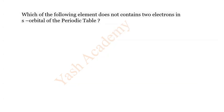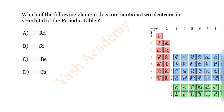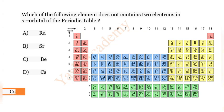Question 3: Which of the following elements does not contain two electrons in the s orbital? Options: A) Radium, B) Strontium, C) Beryllium, D) Caesium. The correct answer is D) Caesium, as it contains only one electron in the outermost s orbital.